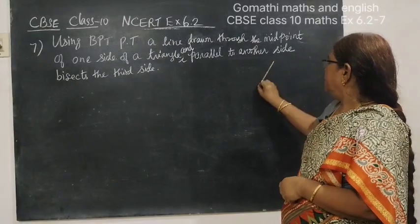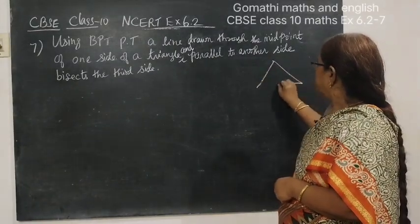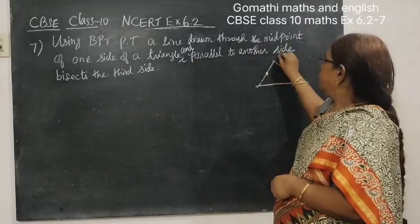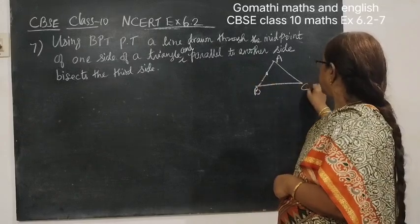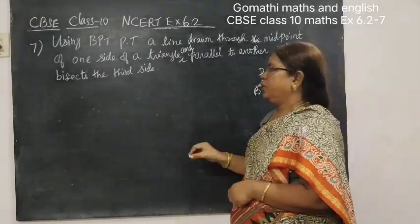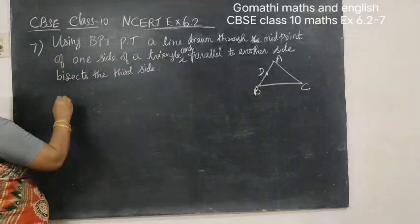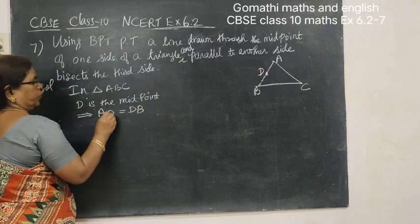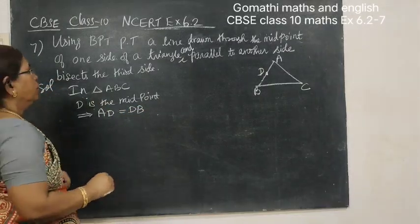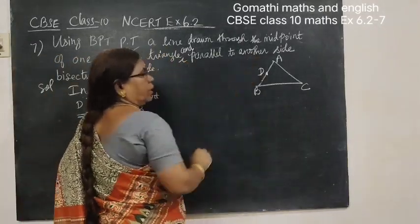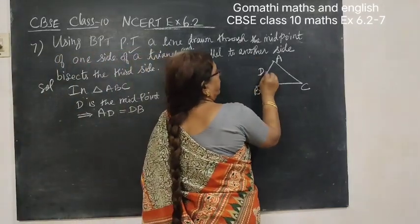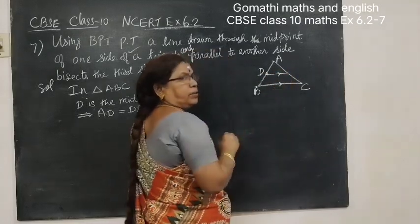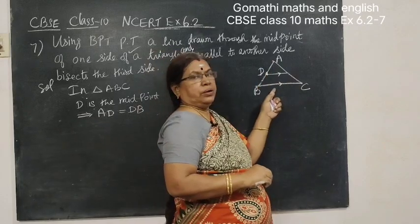You are given a triangle. Take it as triangle ABC. D is the midpoint of side AB, so it is given that AD equal to DB. And a line is drawn parallel to another side: DE is drawn from D parallel to BC.